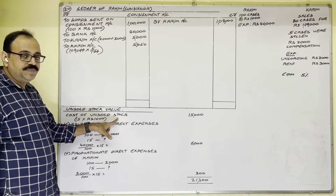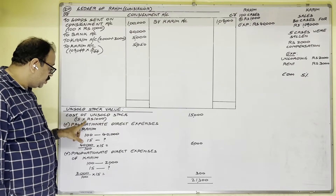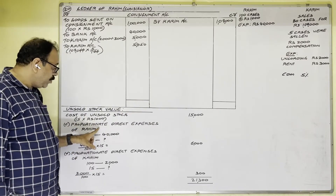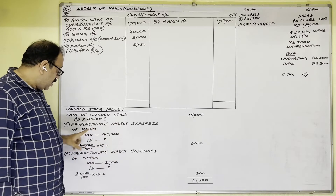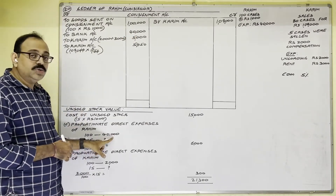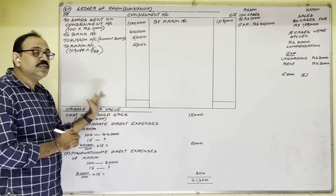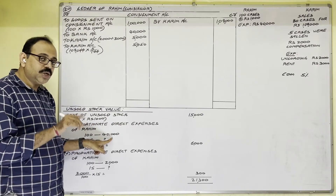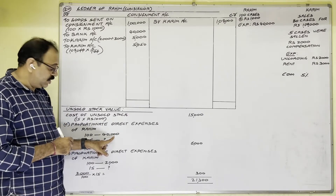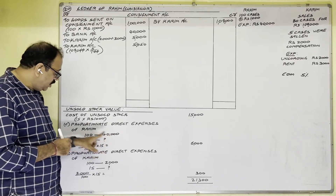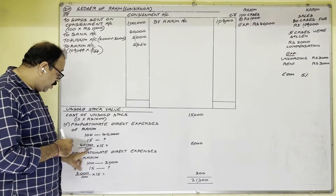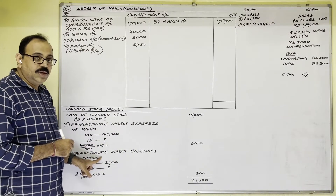Now let us calculate the value of these 15 cases. Cost of unsold stock: 15 cases into ₹1,000 per case equals ₹15,000. To this, we add proportionate direct expenses of the consignor. Raheem's expenditure was ₹40,000 on 100 cases. We want the 15-cases' share, so: ₹40,000 divided by 100 into 15 equals ₹6,000.